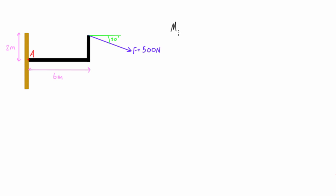For the moment about point A, we have to define a positive sense for the moment. If a moment is tending to create a counterclockwise rotation about point A, that would be a positive moment; otherwise it's negative. Then all we have to do is multiply the perpendicular distance by the magnitude of the force. The line of action of the force falls on this pink line, and the perpendicular distance from the point to that line of action is this red line. We multiply its length by 500 Newtons to get the moment in Newton meters.